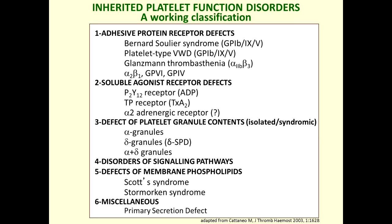Then there is a group of soluble agonist receptor defects — conditions in which a receptor for a soluble agonist of platelet activation is defective. The most well-known are the P2Y12 receptor for ADP and the thromboxane receptor TP defect. Another group, considered quite frequent among inherited platelet function disorders, is defects of platelet granular content: defects of alpha granules, mainly gray platelet syndrome; defects of delta granules, which is delta storage pool disease; or the rarer condition of an associated defect of both granule types.